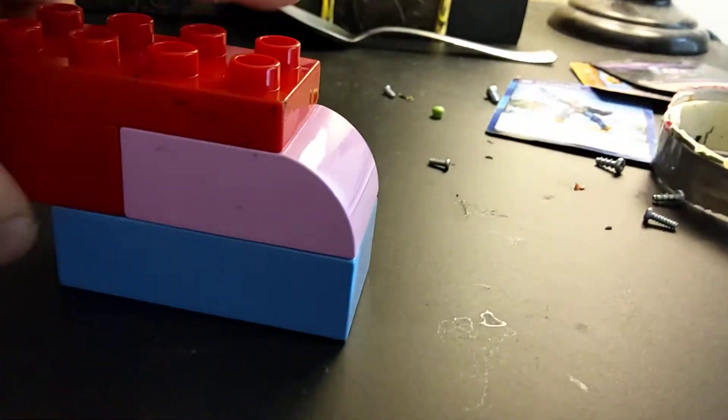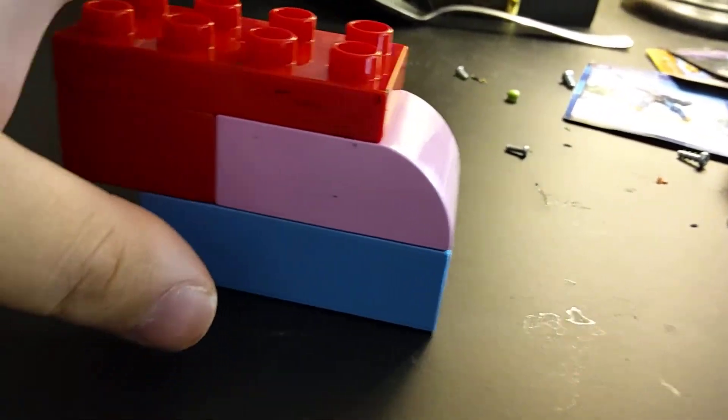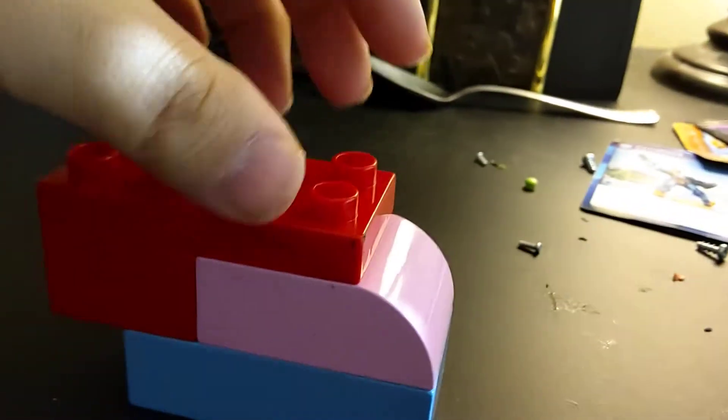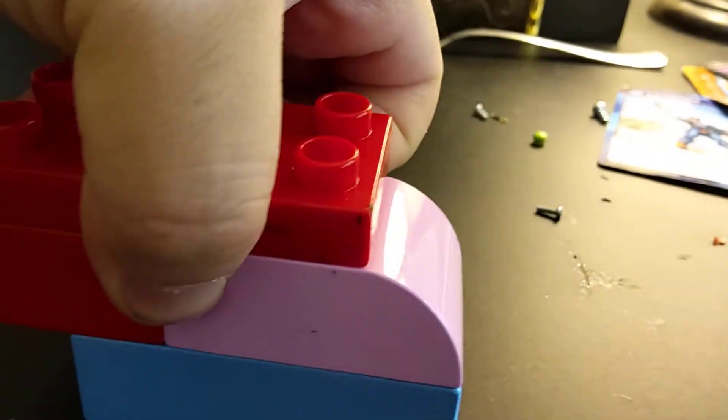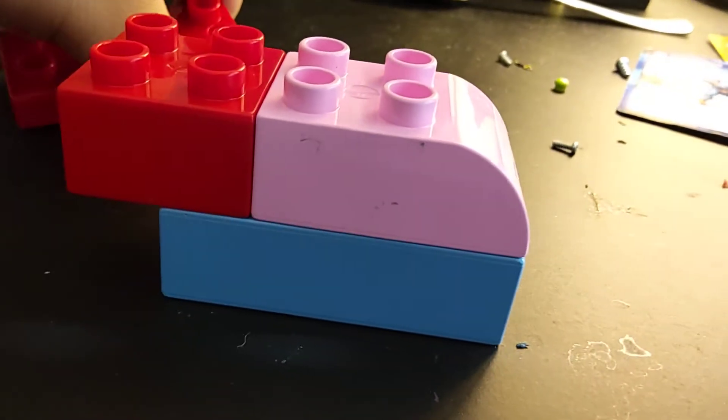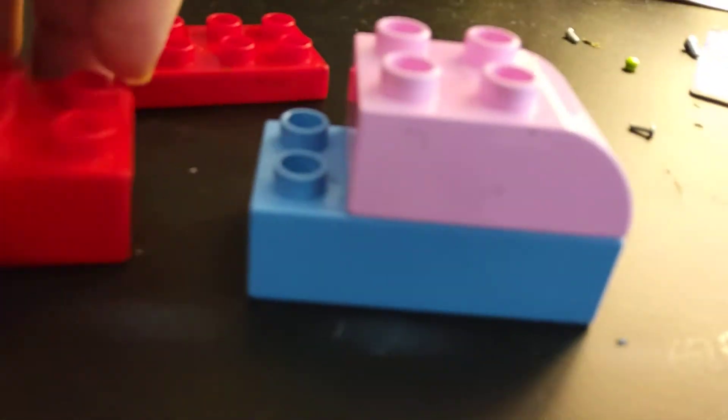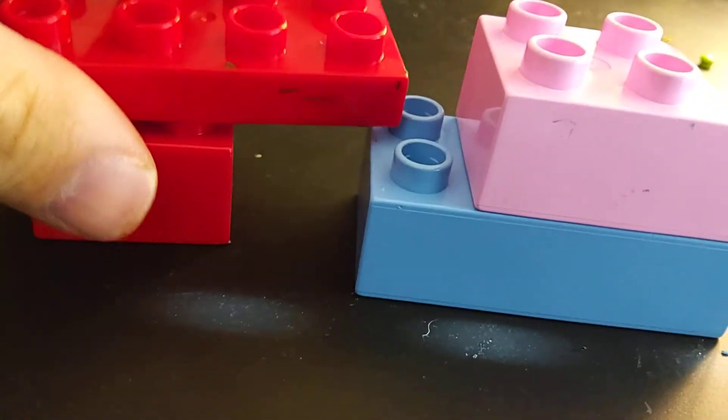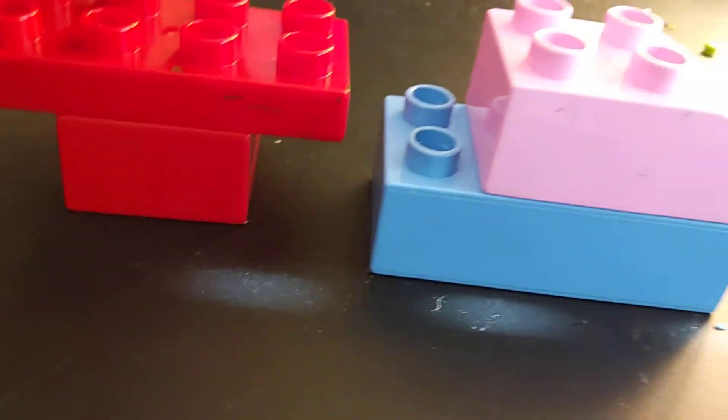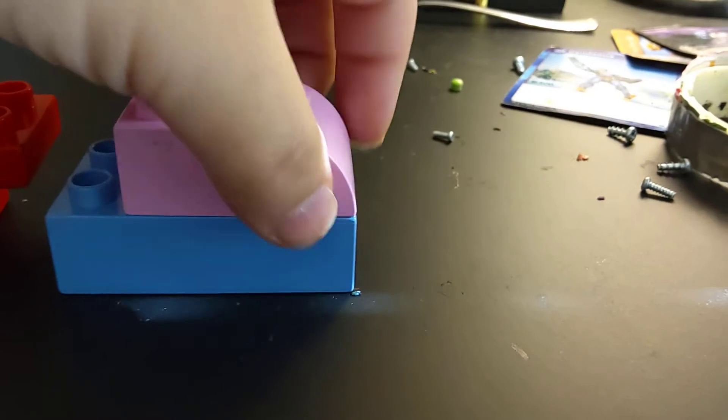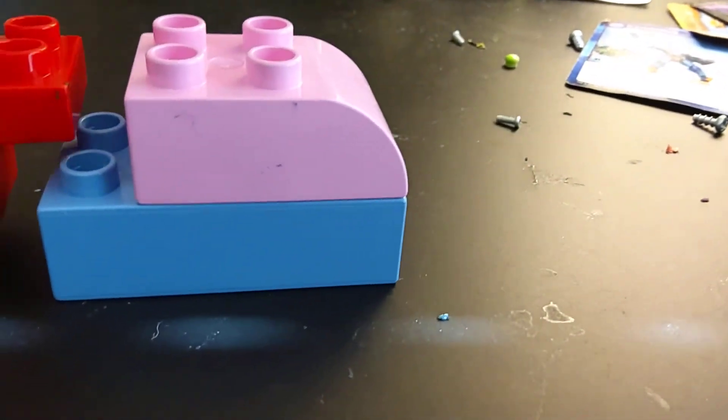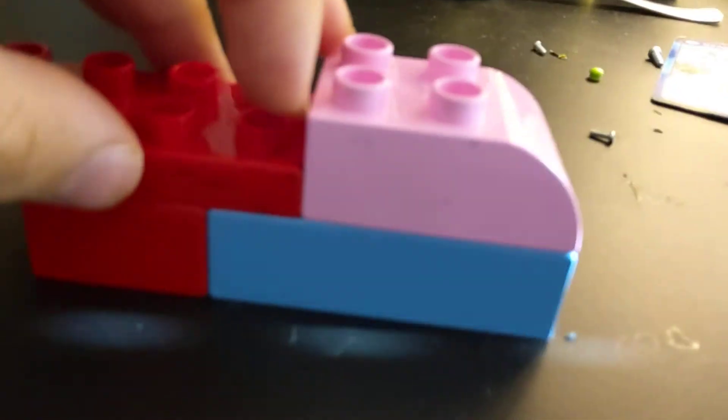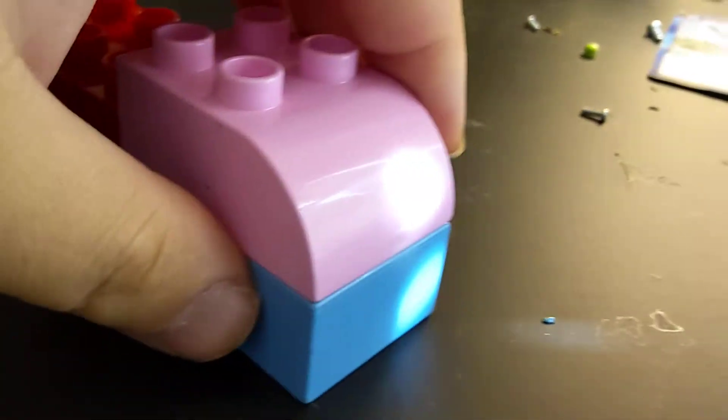And now, as for the inner vehicle, there is some transformation involved. Go ahead and untab the red portion of the inner vehicle. Next, go ahead and tab the red piece onto the back of the windshield.